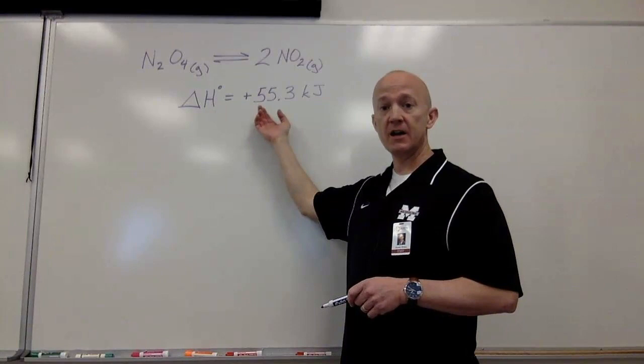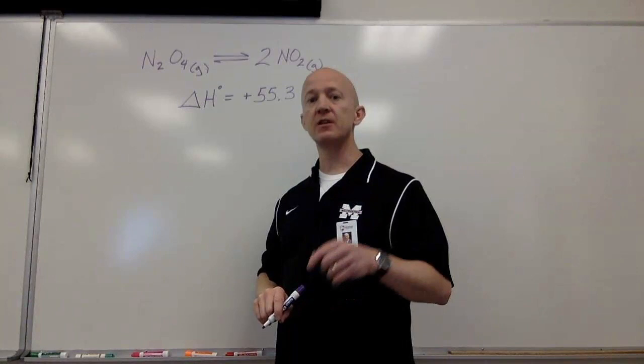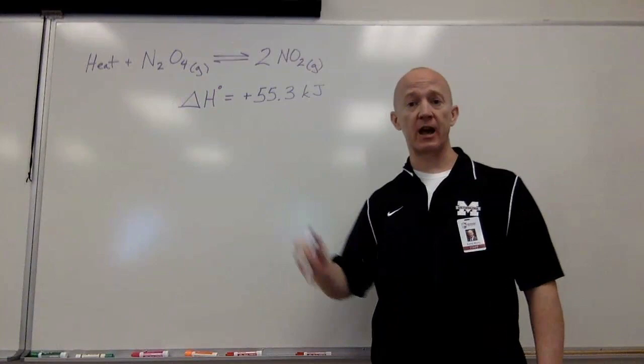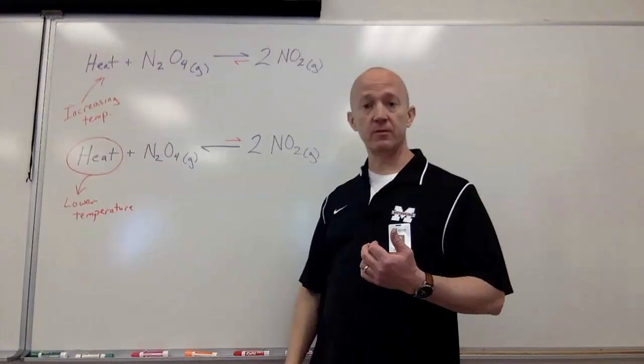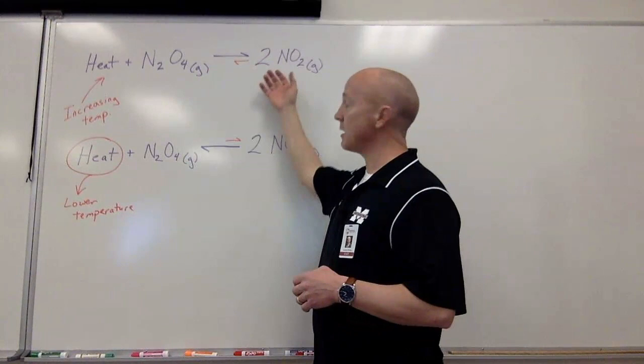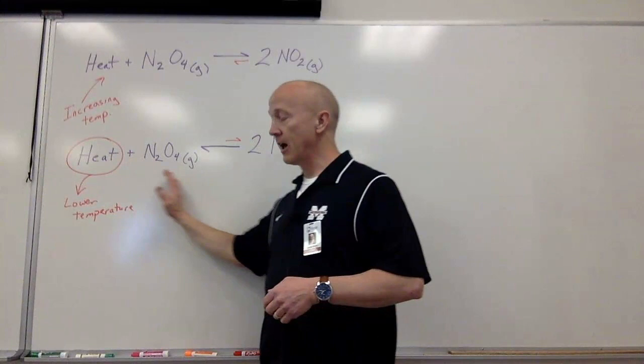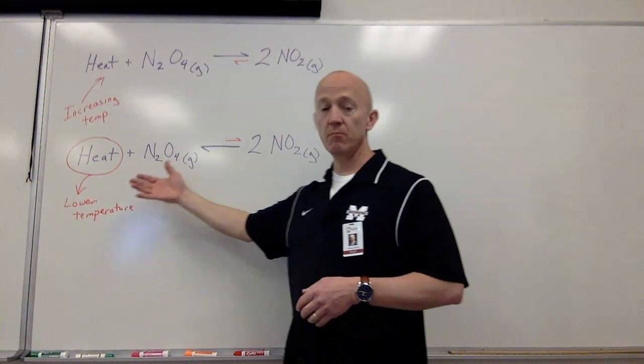The enthalpy of this reaction is positive 55.3 kilojoules, going from dinitrogen tetroxide to nitrogen dioxide. So what that means is that heat is a reactant in this situation. So, how will heat and cooling this reaction affect equilibrium? If we increase the temperature on this reaction, we are adding more reactant in essence, and that means the forward reaction will be stronger. We'll have to make more product to reestablish that equilibrium. But, if we lower the temperature, it's like we're removing heat. So because of that, the wave has to fill the void. The reverse reaction will be stronger. We've got to make more reactant to reestablish the equilibrium.